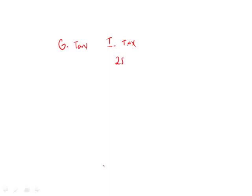In this question, we want to know what percent less is Germany's gasoline tax revenue than its income tax? Its income tax is 28.6%, and its gasoline tax is 20.4%. So we're looking for how much percent less. To find less, we always want to look at the difference. The difference between these is 8.2%.